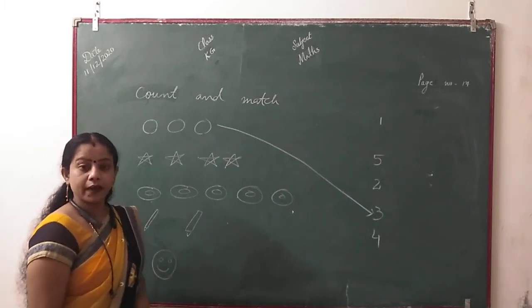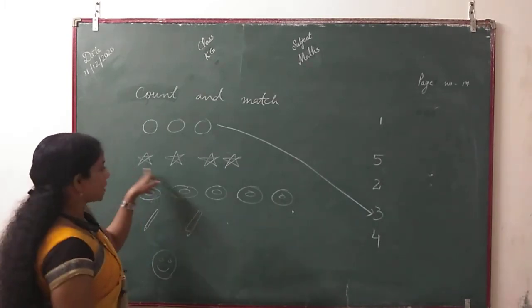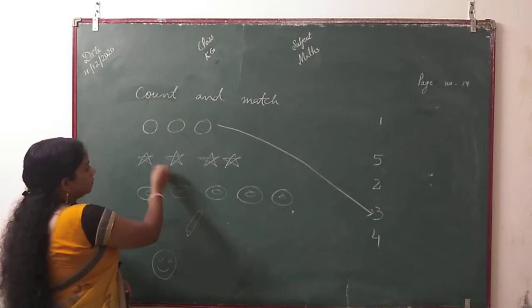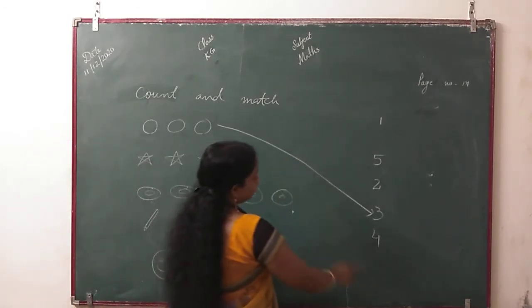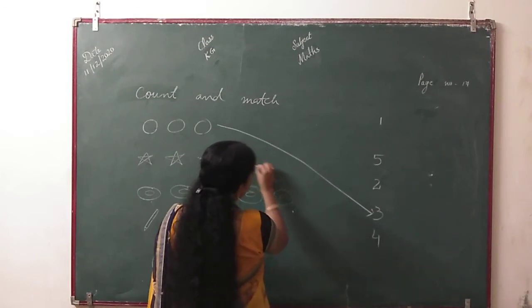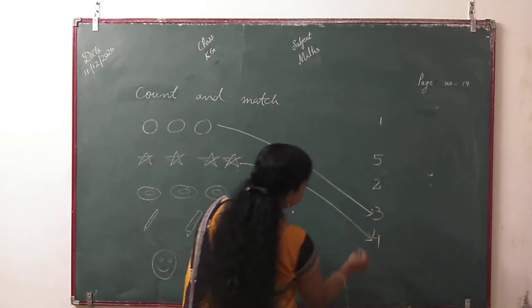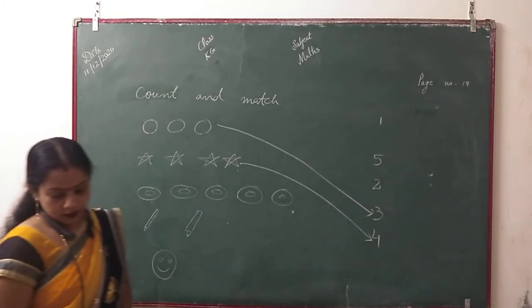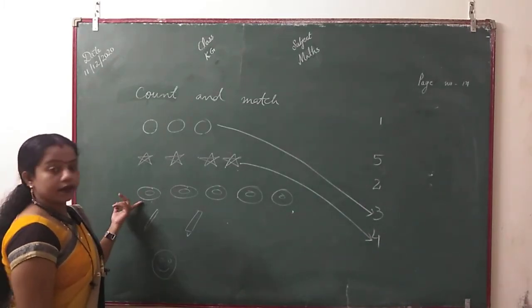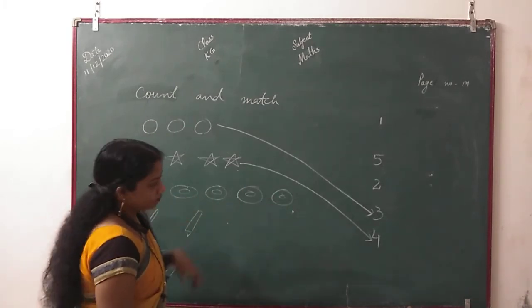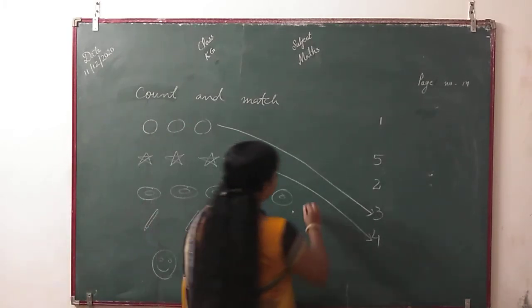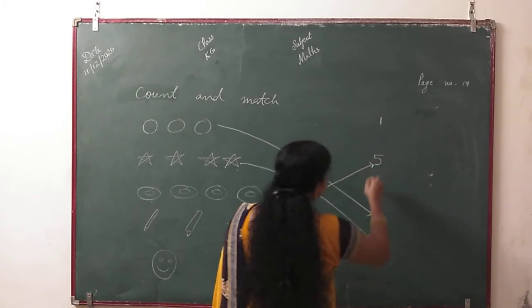Second, we have to count. 1, 2, 3, 4. This is 4. Match this. Next, plates are made. 1, 2, 3, 4, 5. Where is 5? Here it is. Match it.